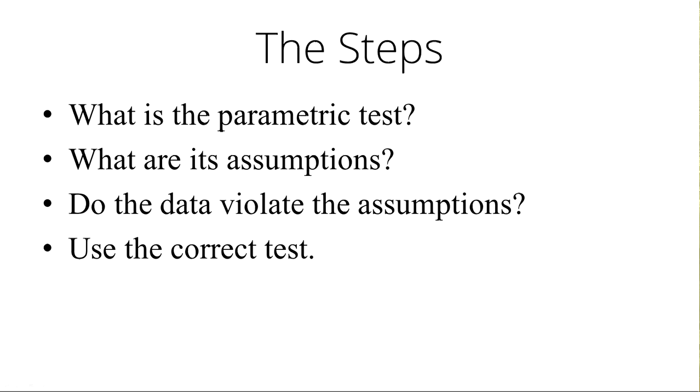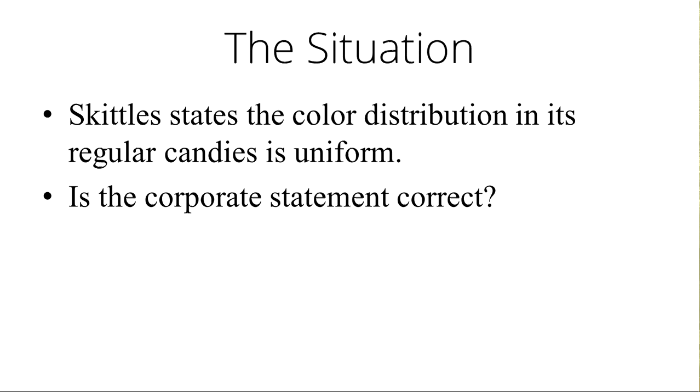Assumes that the cells all have at least five. Expected value in each of the cells is five. If it violates that, then there's nothing else you can do. And the five, again, is Pearson saying five. Since then, we can get down to at least one. It's still a good test, as long as people's lives don't depend on it.